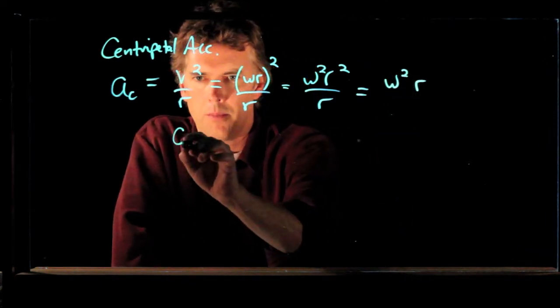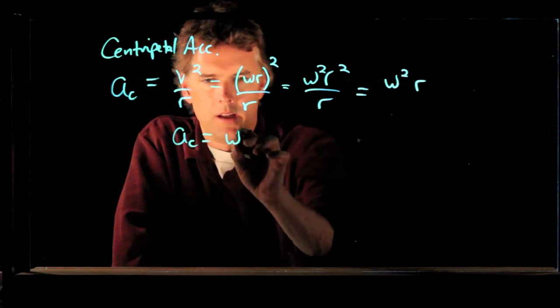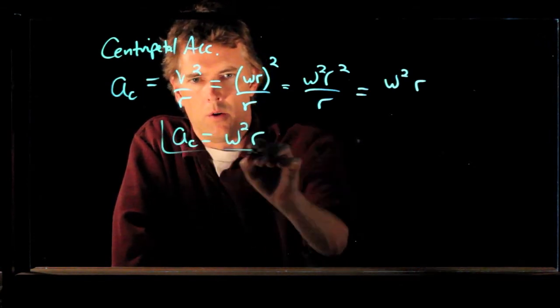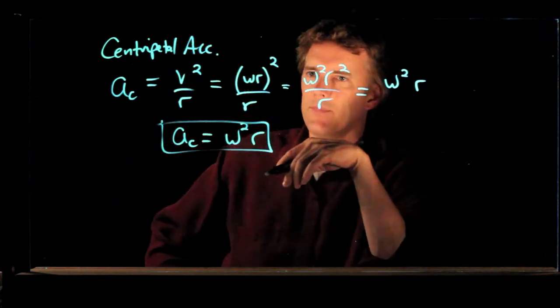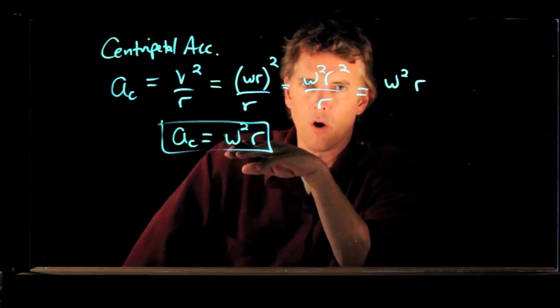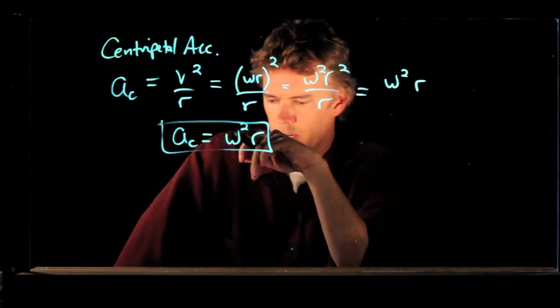So centripetal acceleration is equal to omega squared r. It's the same thing as v squared over r, of course. We've just changed the variables.